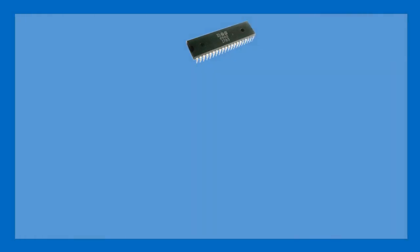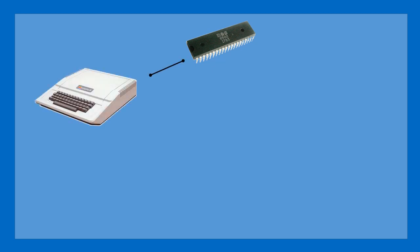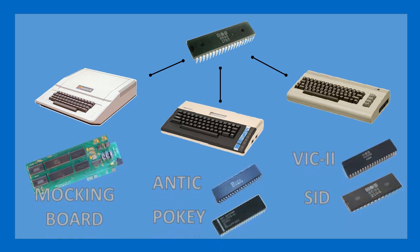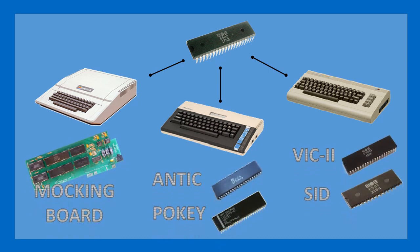The story starts with the MOS 6502 processor, which was common to a lot of platforms in the 1970s and 80s, like the Apple II, the Atari 8bit line, and the Commodore 64. While one might think it should be straightforward to program a game and deploy on each of those platforms, in actual fact the hardware for graphics and sound varies very widely between those platforms.